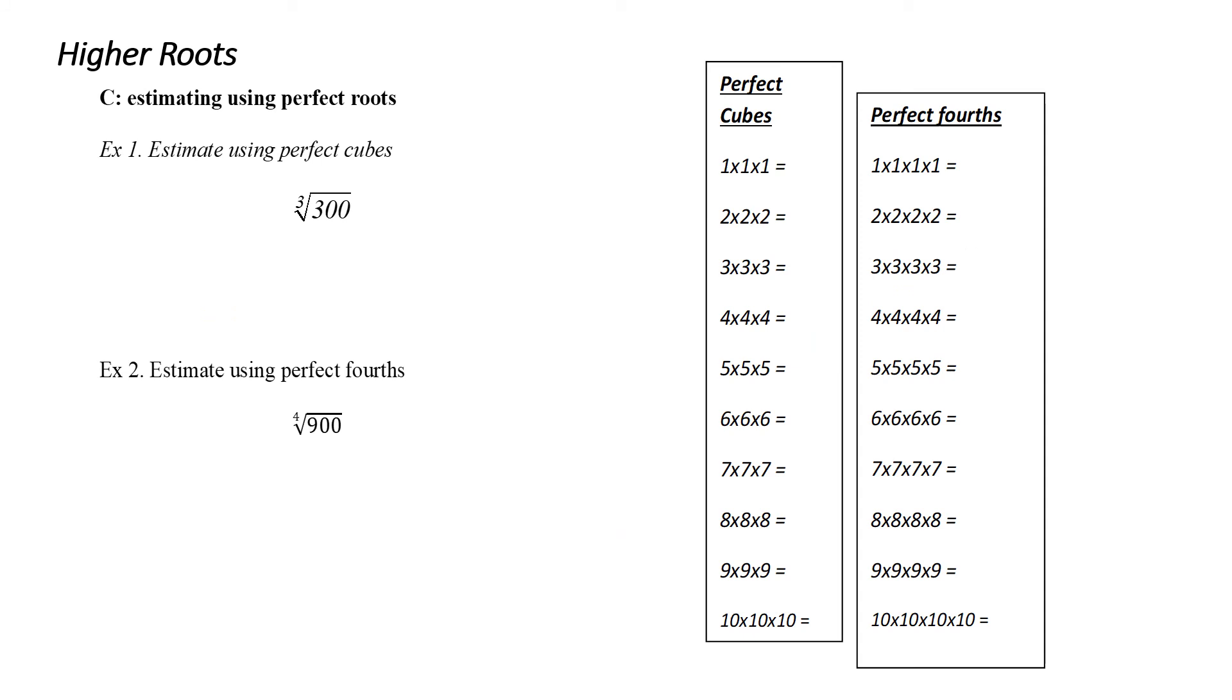All right, how do we estimate using perfect roots for higher roots? Well, we're going to follow exactly the same strategy we used with squares. First, we need to list our perfect cubes and our perfect fourths. So there we go. Now, just like before, I need to know what perfect cubes are around 300. I know 300 is in between 216 and 343. So I know that my answer is going to be somewhere in between 6, the cube root of 216, and 7, the cube root of 343.